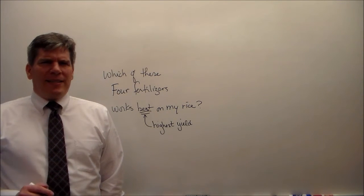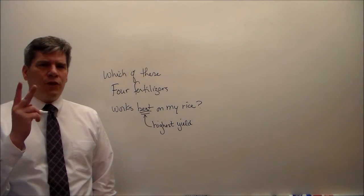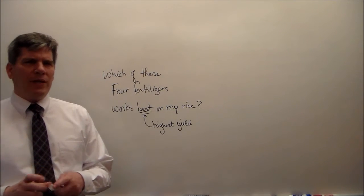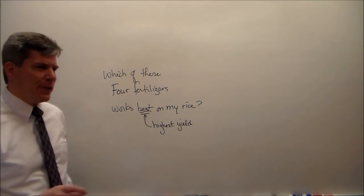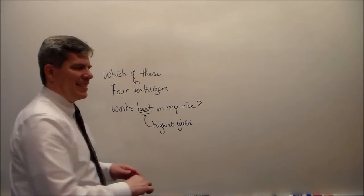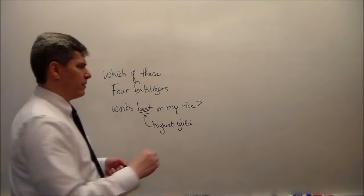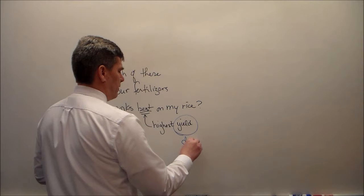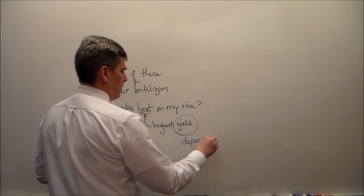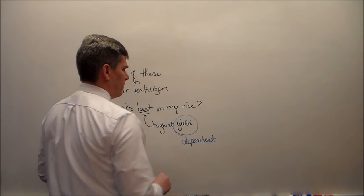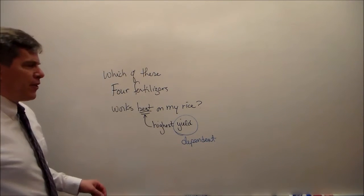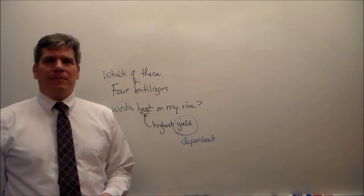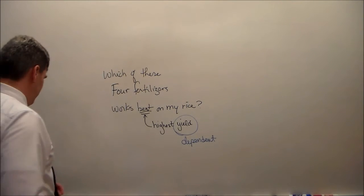Notice a couple things about how this is set up. There are two variables. Variable one is the dependent variable — it's the yield. Variable two is the fertilizer type — it's the independent variable.